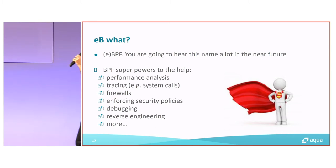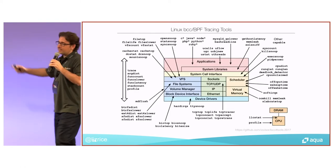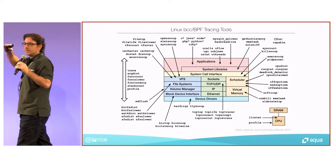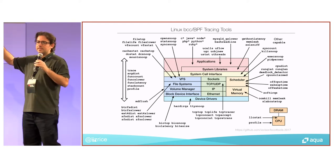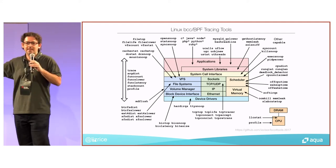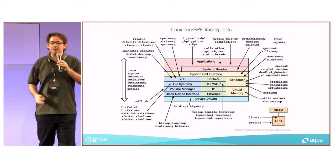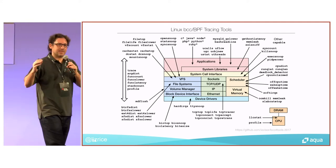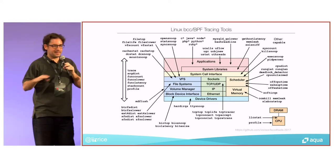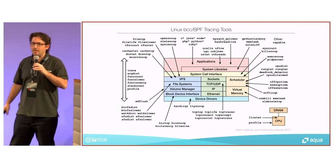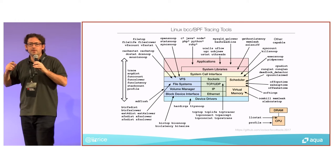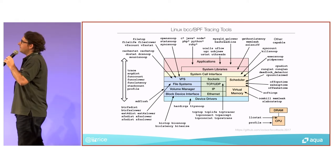What do I mean by anything? Anything — it allows you to get down to kernel levels. If anyone used Strace before, think of Strace on steroids. You can pretty much hook into anything in the underlying operating system using eBPF with very, very low performance impact.